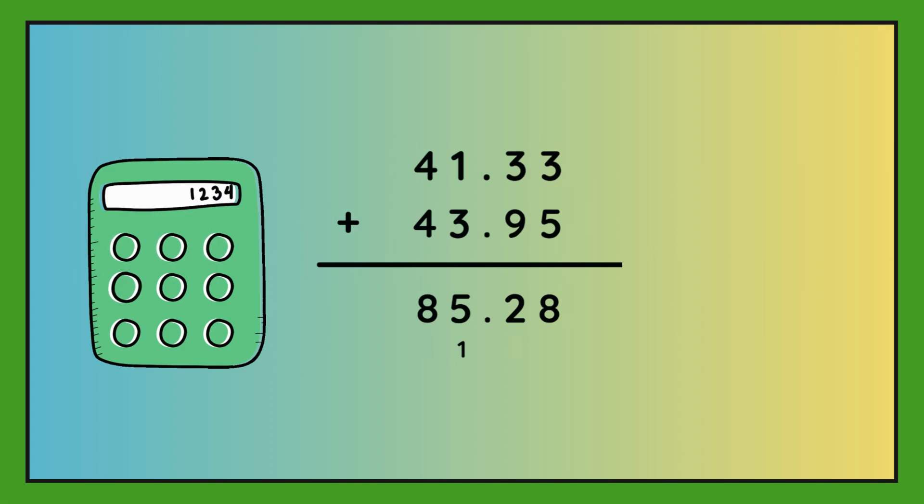The answer is 85.28. So 3 plus 5 is 8. 3 plus 9 is 12. Pop your 2 in, carry 1 over. 1 plus 3 plus 1 is 5. And 4 plus 4 is 8. So the answer is 85.28.